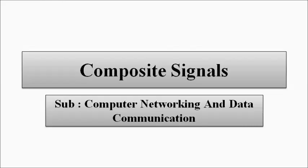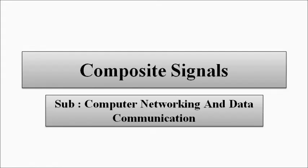Hello friends, welcome to Engineering Tutorial. So far in the physical layer discussion related to data communication and computer networking, we discussed about the basic concepts related to signals, the characteristic features of signals, and the time domain and frequency domain representation of signals. In this video, we are going to discuss about another important concept related to signals which we will use in various discussions related to data communications — the concept of composite signals.